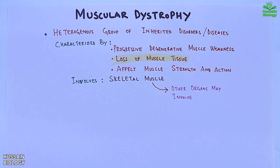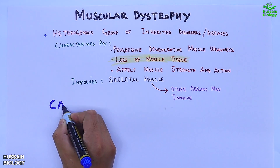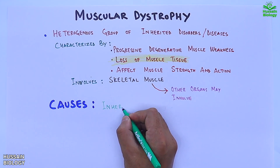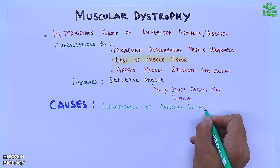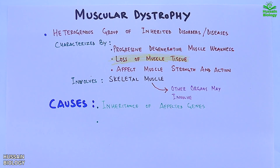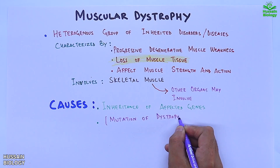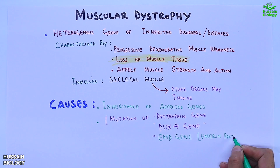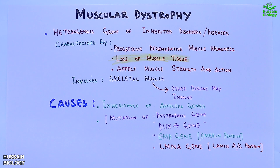First of all, let's see the causes of muscular dystrophy disorders. Muscular dystrophy is all due to the inheritance of affected genes, which leads to mutations or dysregulation of different genes such as the dystrophin gene, DUX4 gene, EMD gene, LMNA gene, and many other genes.